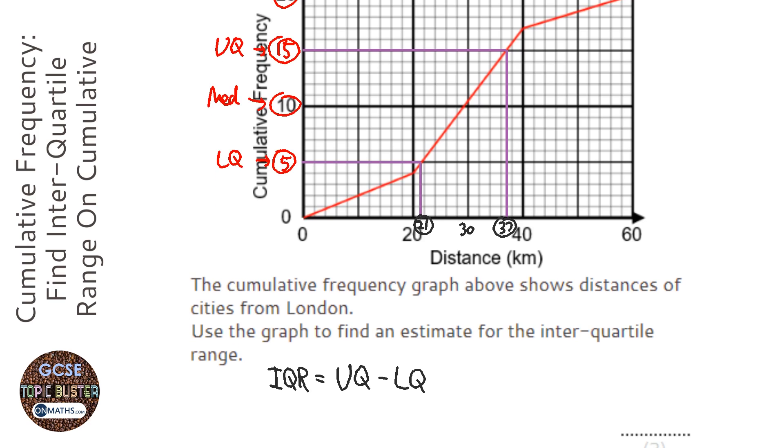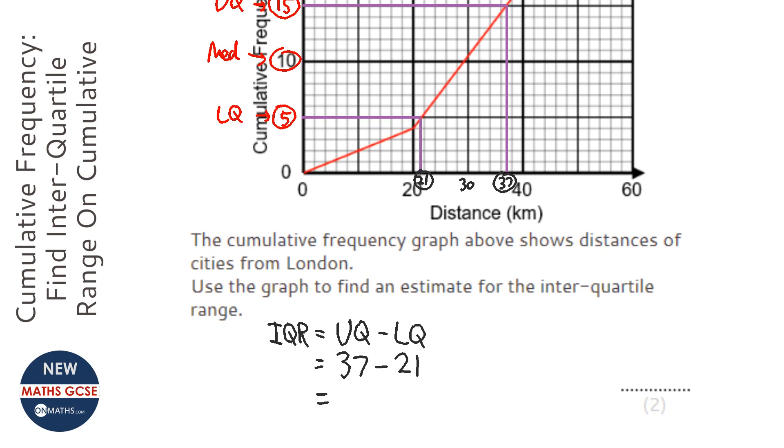So our upper quartile is 37 and our lower quartile is 21, and they'll always be quite forgiving on the exam, so they'll let you have like one off. It's normally a bit of a range.